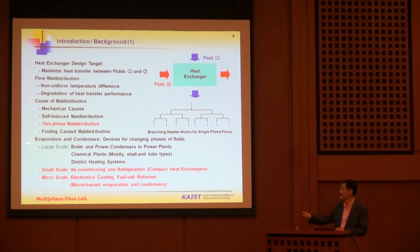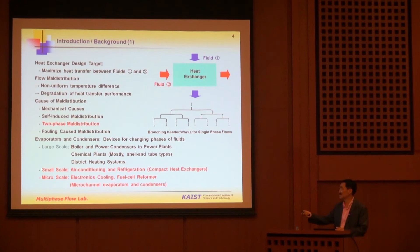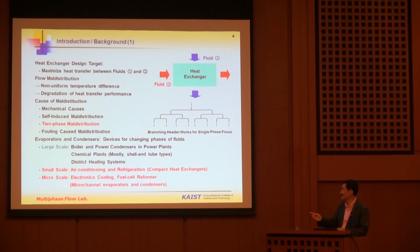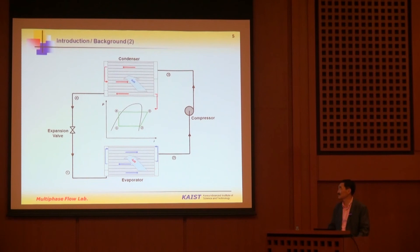We will concentrate our talk on two-phase maldistribution — that means evaporators and condensers, especially the evaporator. We're not talking about large-scale power plant or chemical plant evaporators and condensers, but small-scale and micro-scale compact heat exchangers, especially for air conditioning and refrigeration systems. These days we'd like to make heat transfer equipment very small — down to mesoscale or microscale for electronics cooling and fuel cell reformers, including micro-channel evaporators and condensers.